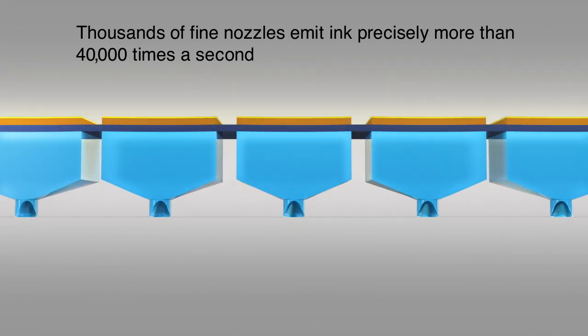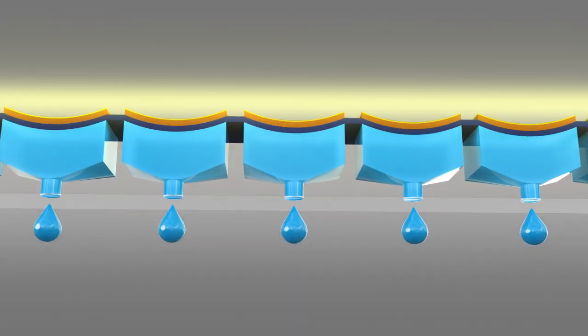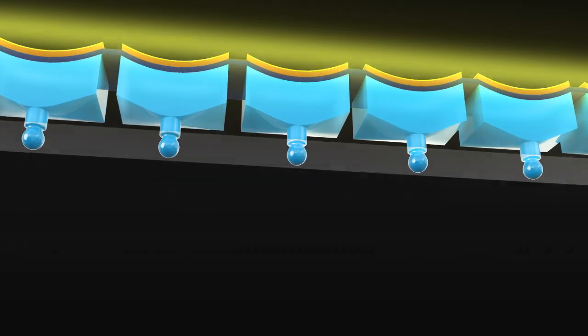Each printhead contains densely arranged rows of these sets, with each one firing precisely the right amount of ink at precisely the right place more than 40,000 times a second.